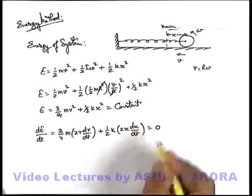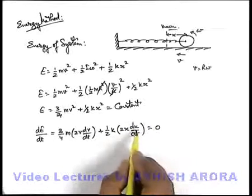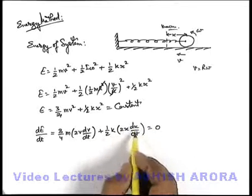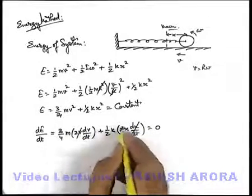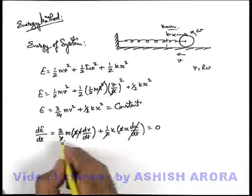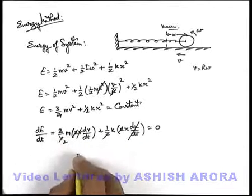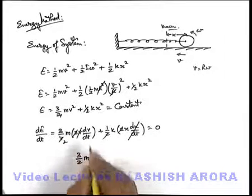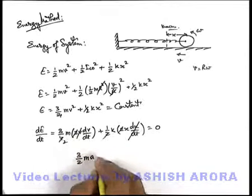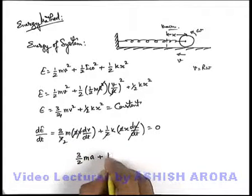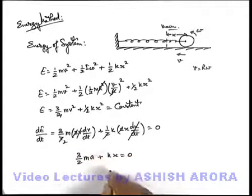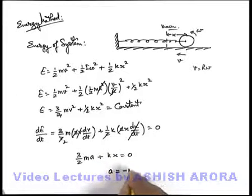And this is equal to zero. In this expression here dx by dt is the speed v, so in this expression this v can be cancelled and this 2 also gets cancelled out. Finally we are getting the relation 3 by 2 m dv by dt, we can write the acceleration, plus k x is equal to zero, which gives us a is equal to minus 2k upon 3m into x.